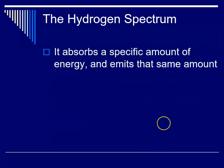So what's going on with the hydrogen spectrum is the atom absorbs a specific amount of energy, and the electrons move up to a higher energy level, and then when they relax back down to where they came from, they emit that same quantity of energy.